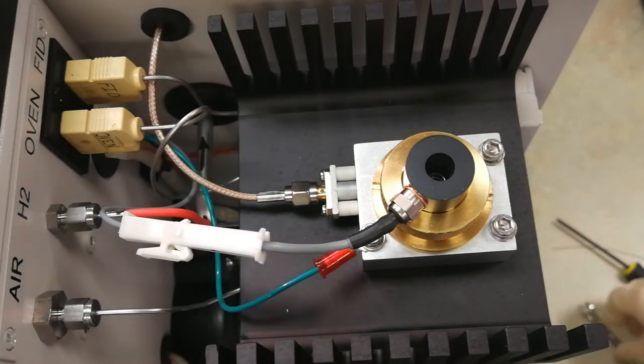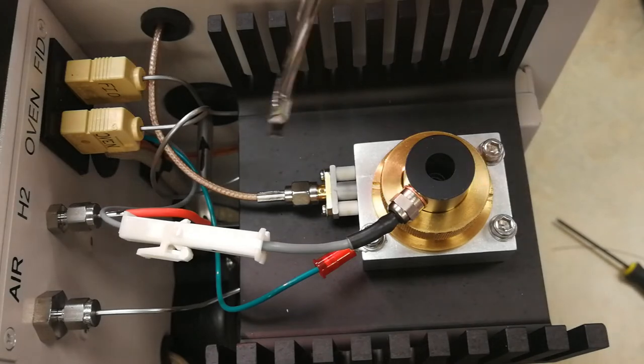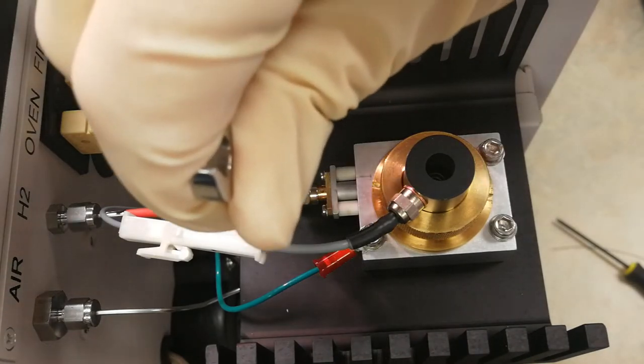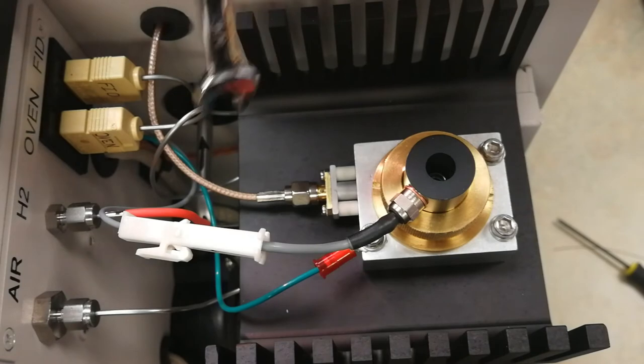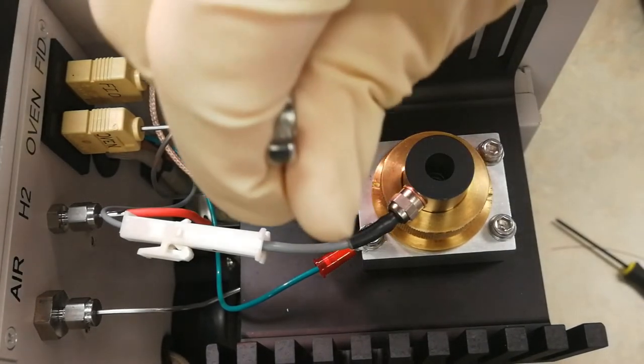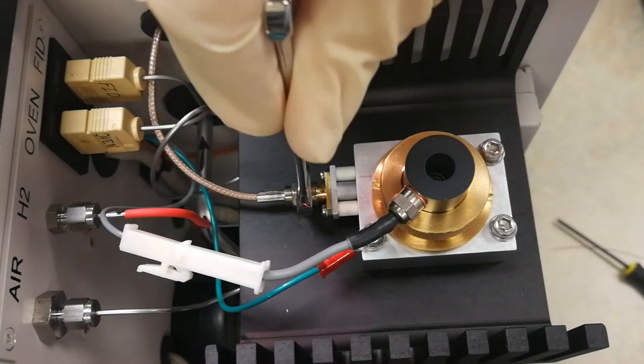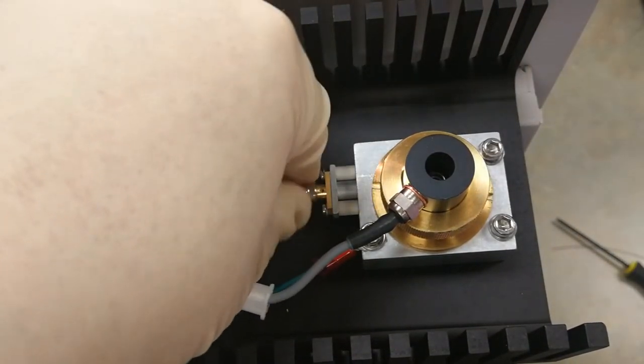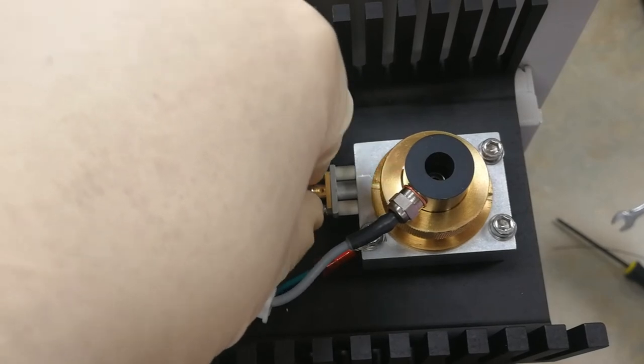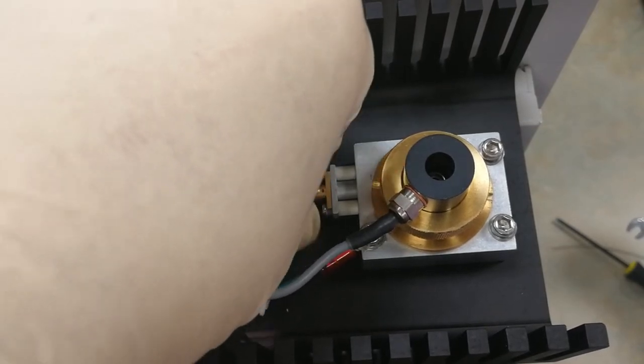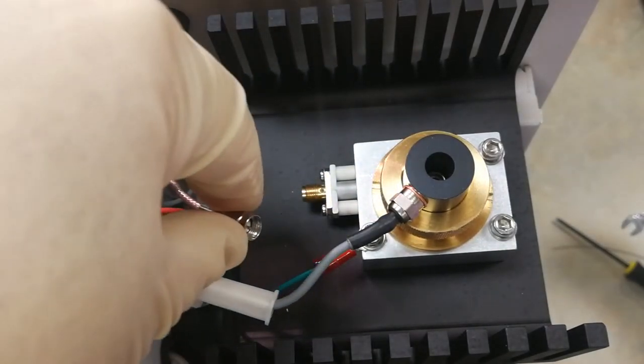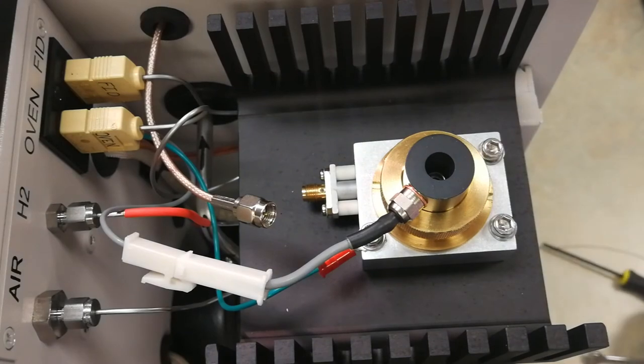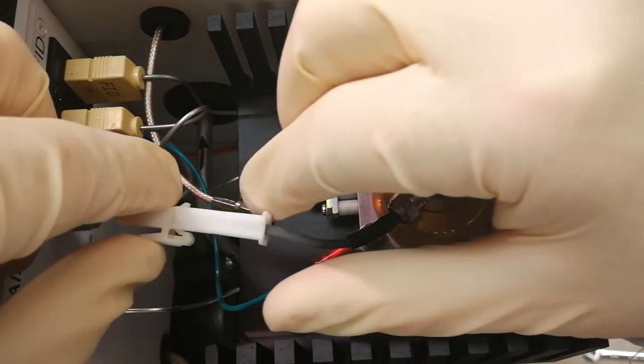You can start with taking your 5/16 wrench and loosening your FID signal cable. You can just push it aside. Disconnect your igniter cable.